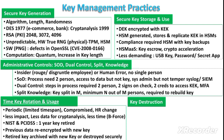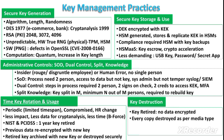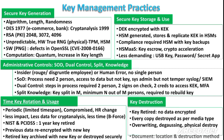In key destruction, the key is retired once no data is encrypted by it. You then destroy every copy of that key, and this destruction is carried out according to the media type — for example, certain media types require overwriting, degaussing, or physical destruction of the media containing the copy of the retired key. Finally, you document the location where you destroyed the key and the destruction method used.